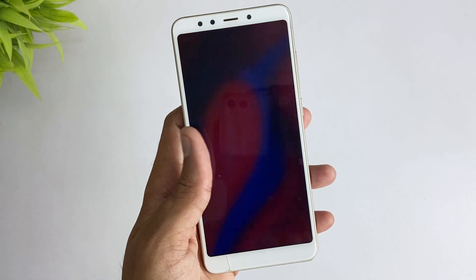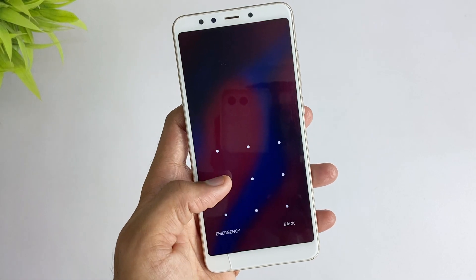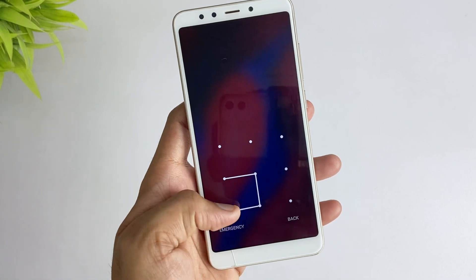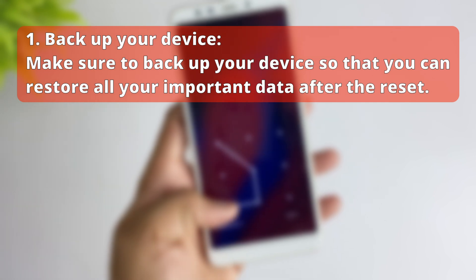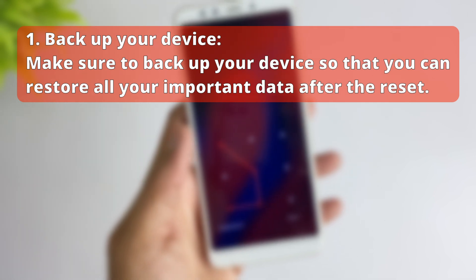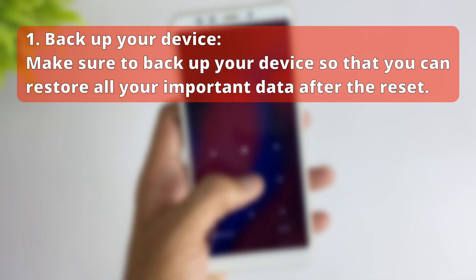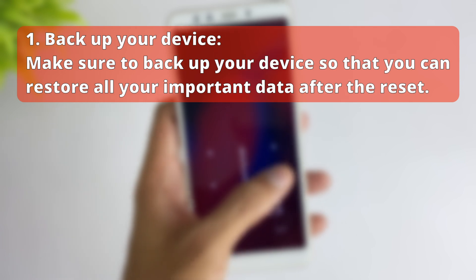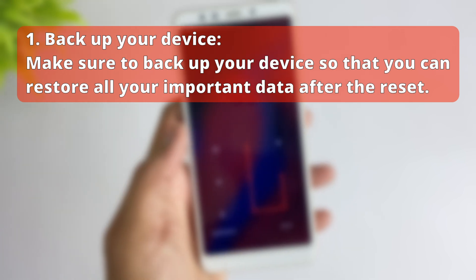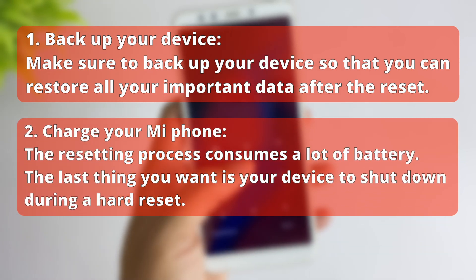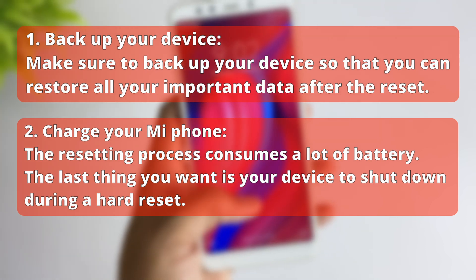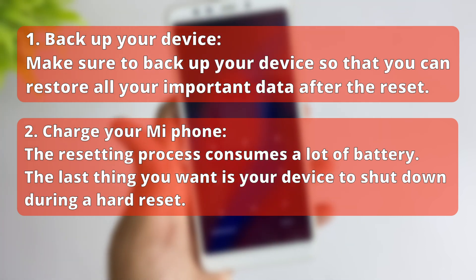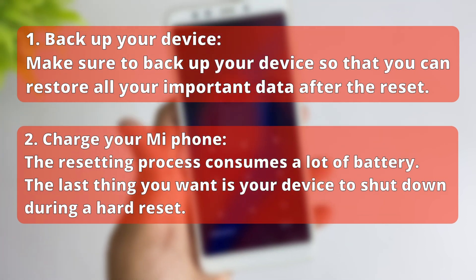Here are some things you should keep in mind before doing a factory reset. First, back up your device. Make sure to back up your device so that you can restore all your important data after the reset. Second, charge your Mi Phone. The resetting process consumes a lot of battery, and the last thing you want is your device to shut down during a hard reset.